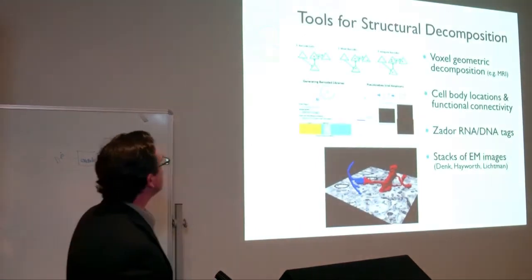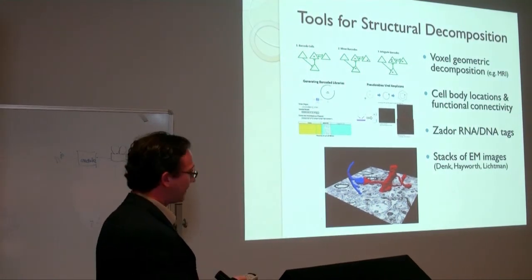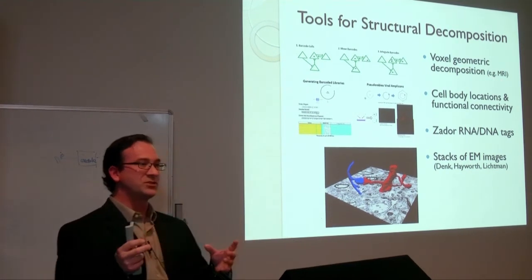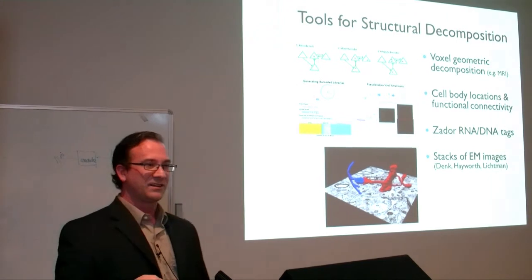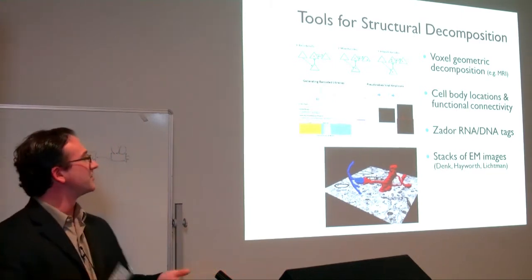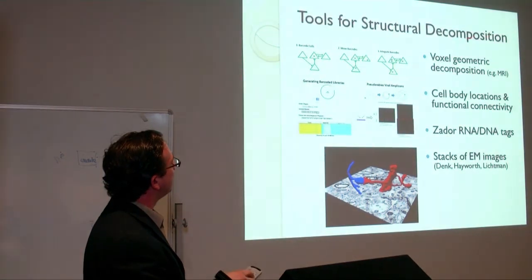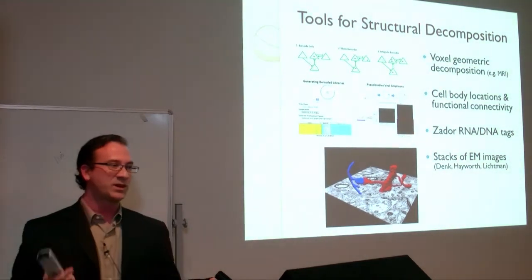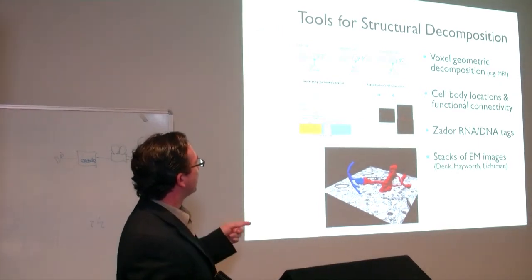There are several tools for structural decomposition. One that's been around a while is MRI, which gives a geometric decomposition in voxels showing activity differences between states. The problem is that MRI tools don't provide high resolution — neither temporally nor spatially — so we don't get much fine-grained detail from this, though there are other uses for MRI that I'll return to.